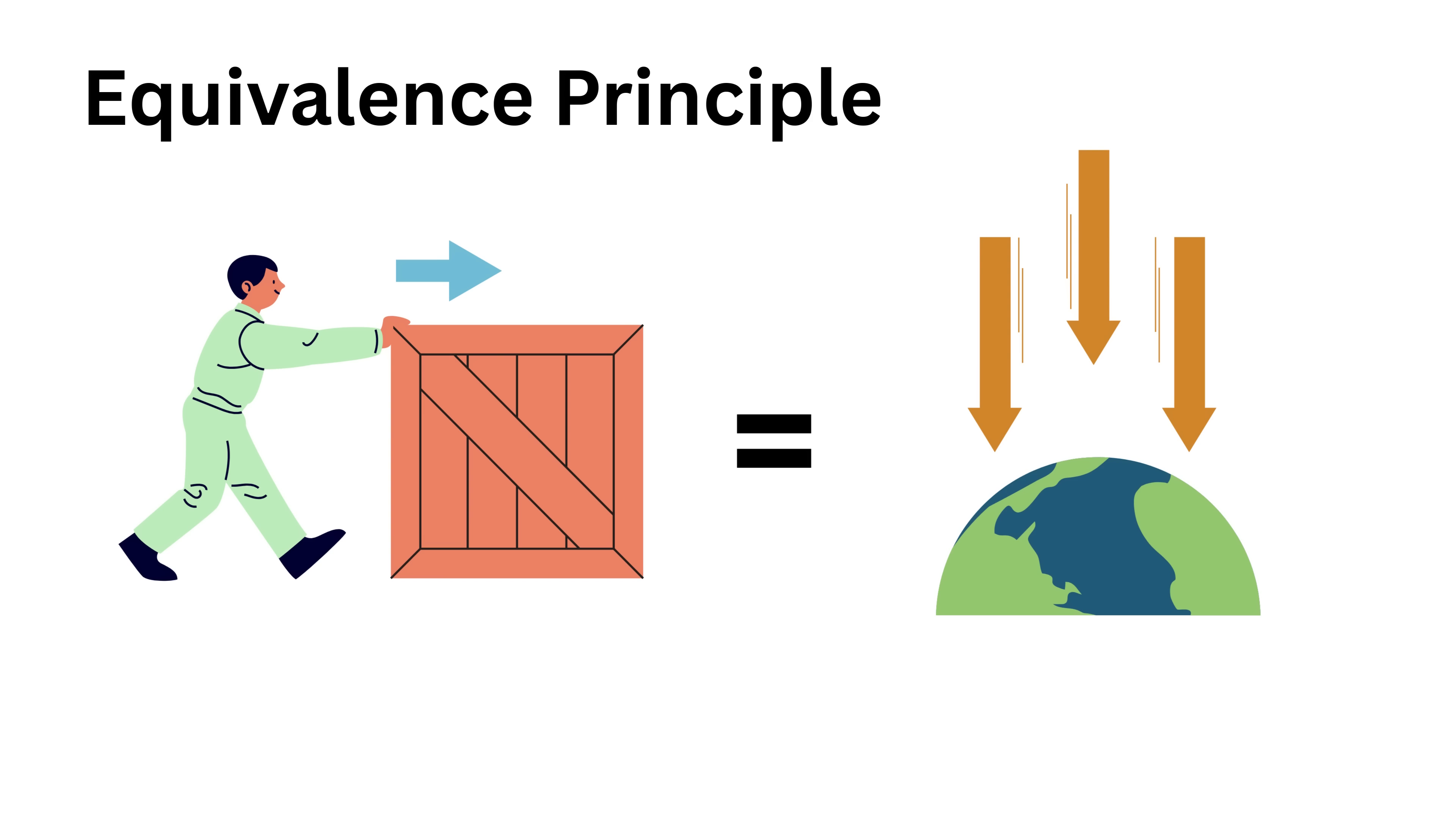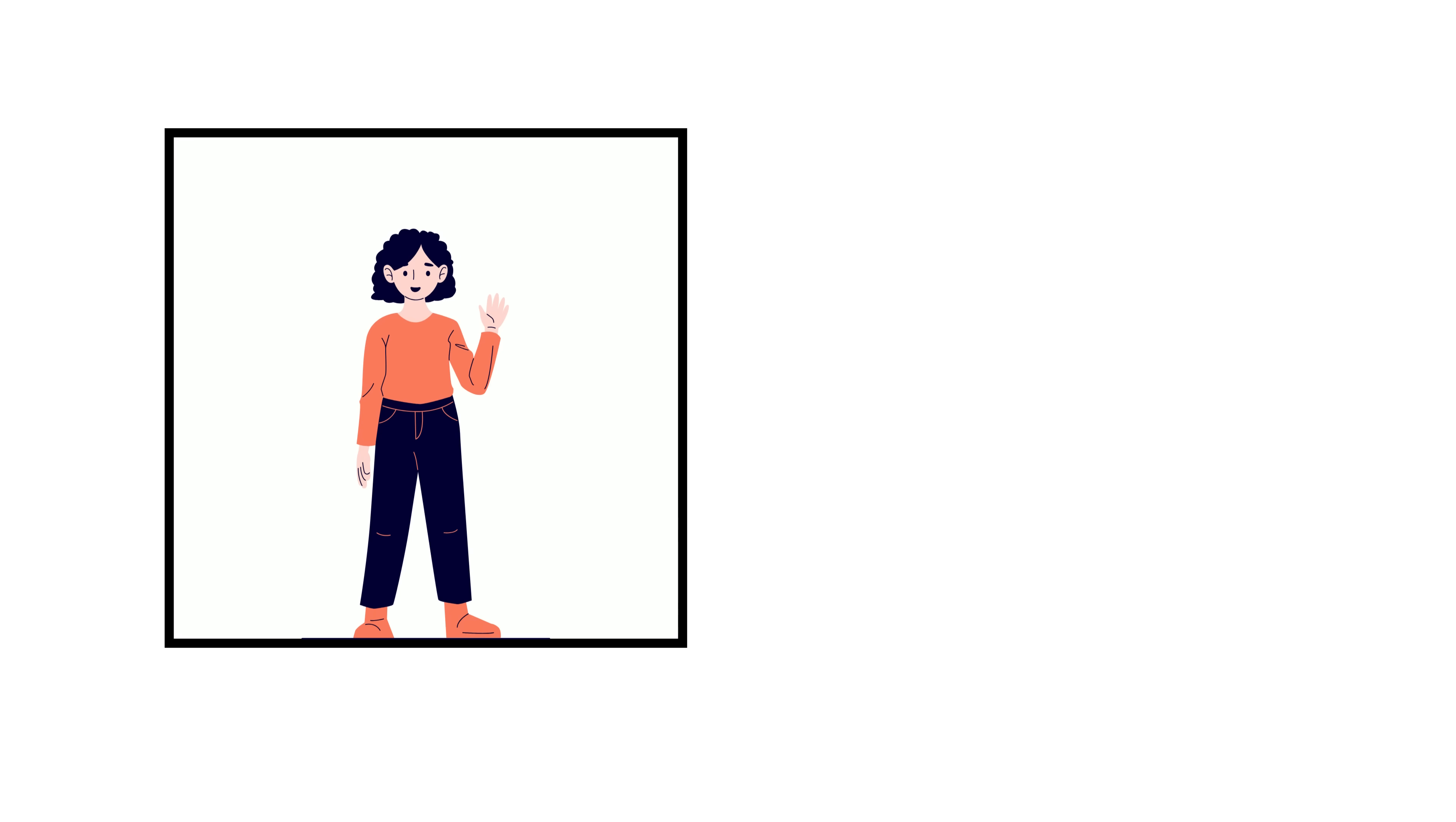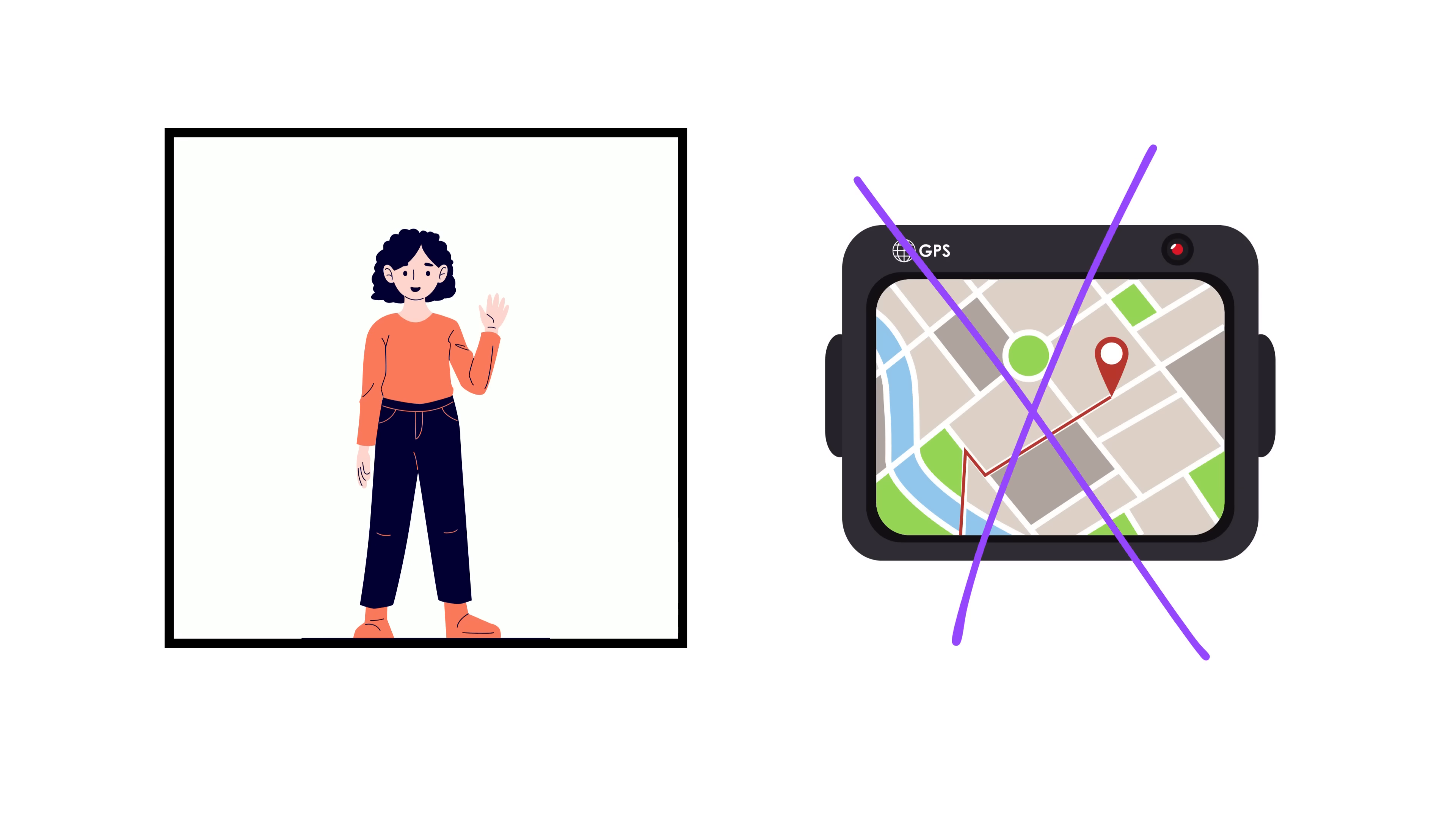To understand it better, Einstein did more thought experiments. Imagine you're inside a completely sealed room. No windows, no doors, no way to look outside or know where you are.